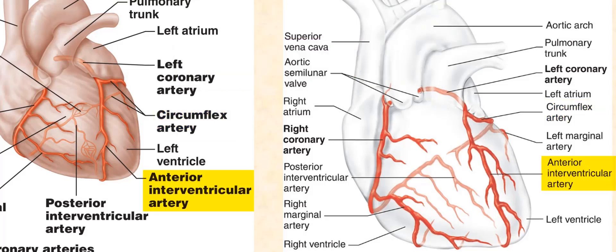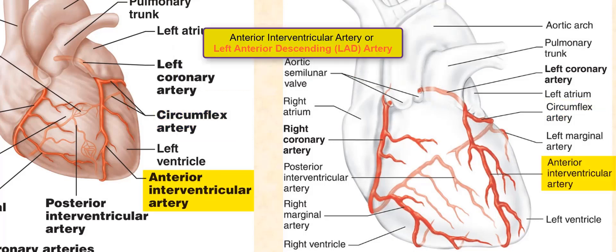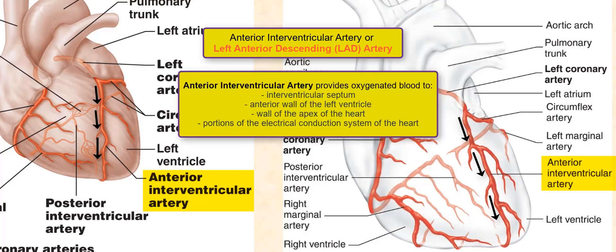The anterior interventricular artery is also called the left anterior descending artery. It is found along the anterior interventricular sulcus. This artery supplies oxygenated blood to the interventricular septum, the anterior wall of the left ventricle, the wall of the apex of the heart, and portions of the electrical conduction system of the heart.